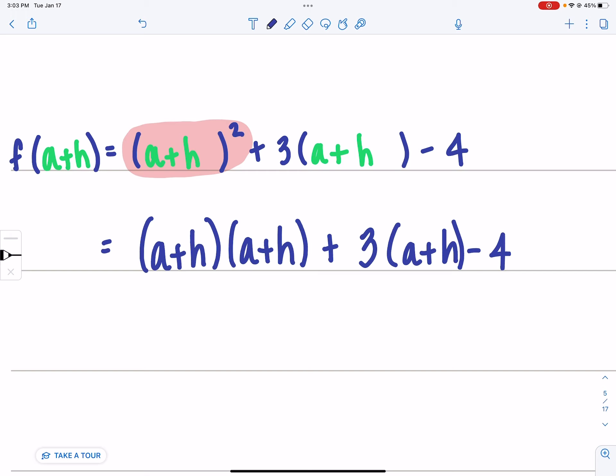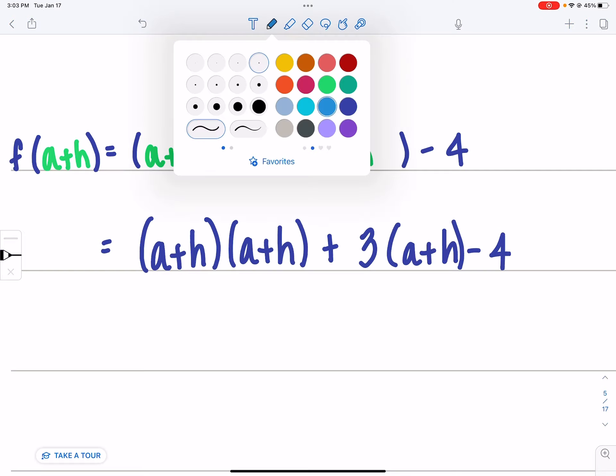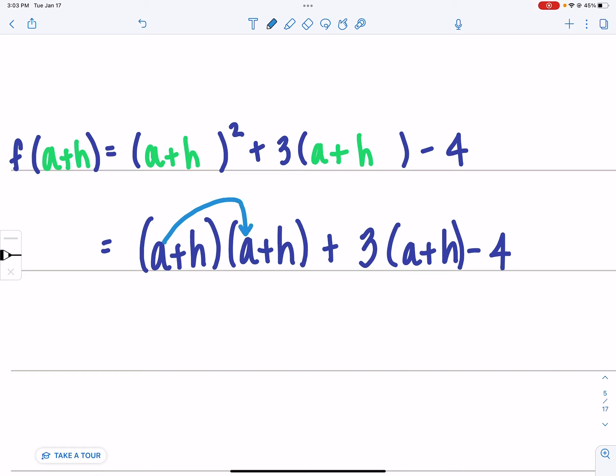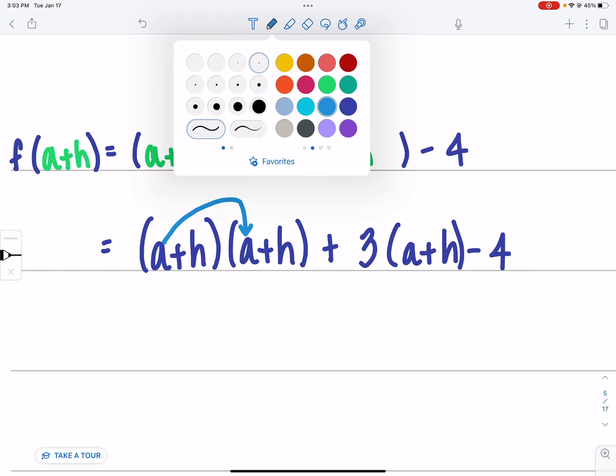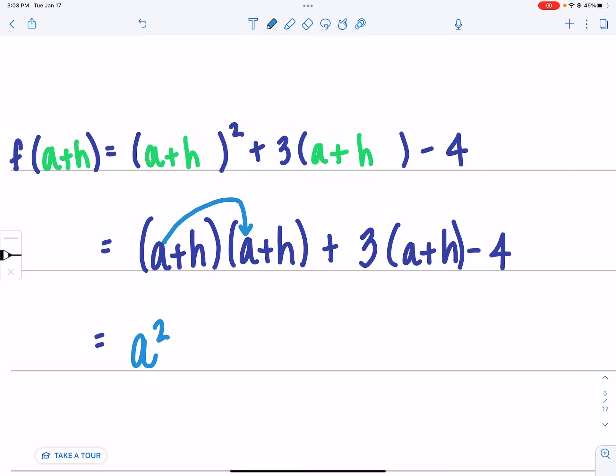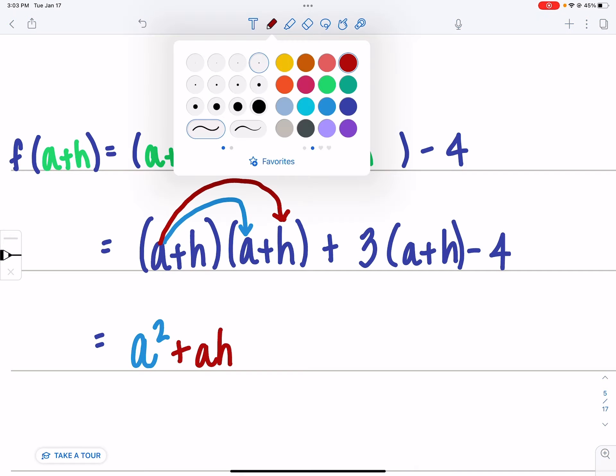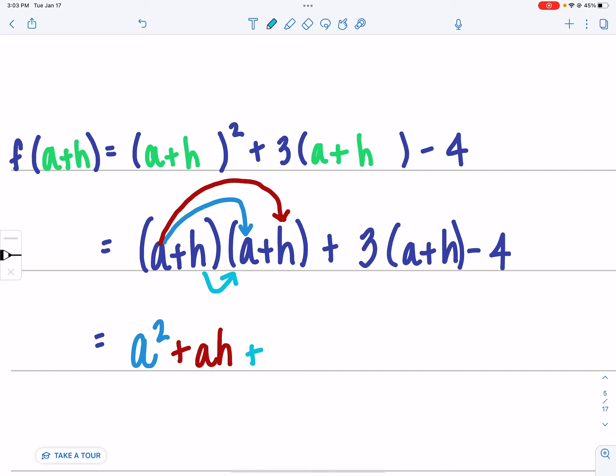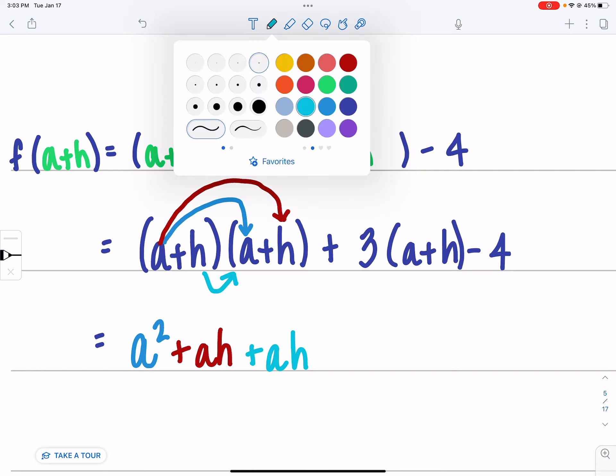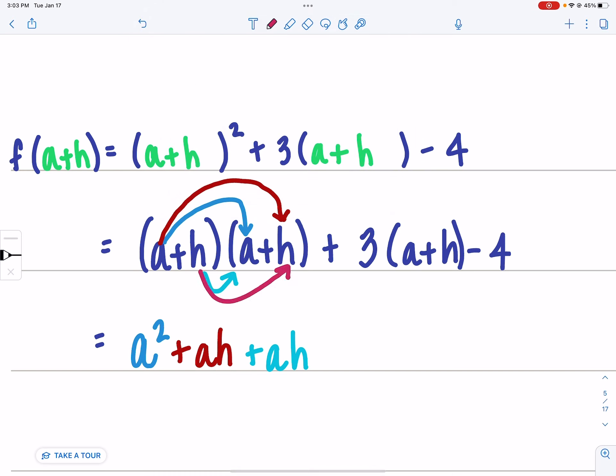And here is where I jump to step. So when we do FOIL, that is first, so a times a, that's a squared. Then outside, that's plus ah. Inside, that's another plus ah. And then the last two terms, so that's going to be a plus h squared.